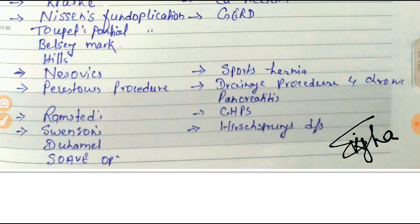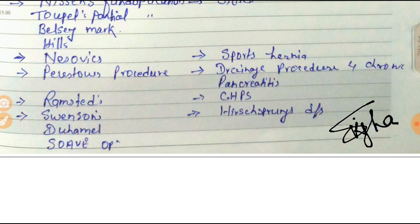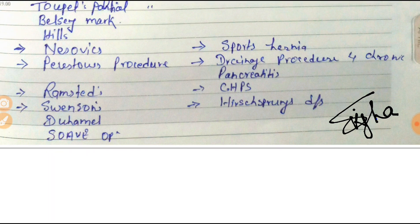For congenital hypertrophic pyloric stenosis (CHPS), Ramstedt's operation is used. CHPS is a congenital abnormality in which the pylorus circular muscles become hypertrophied, causing constriction of the pylorus. Food cannot pass further, resulting in obstruction of the GIT system and regular vomiting. Metabolic abnormalities are found, and the investigation of choice is ultrasonography.